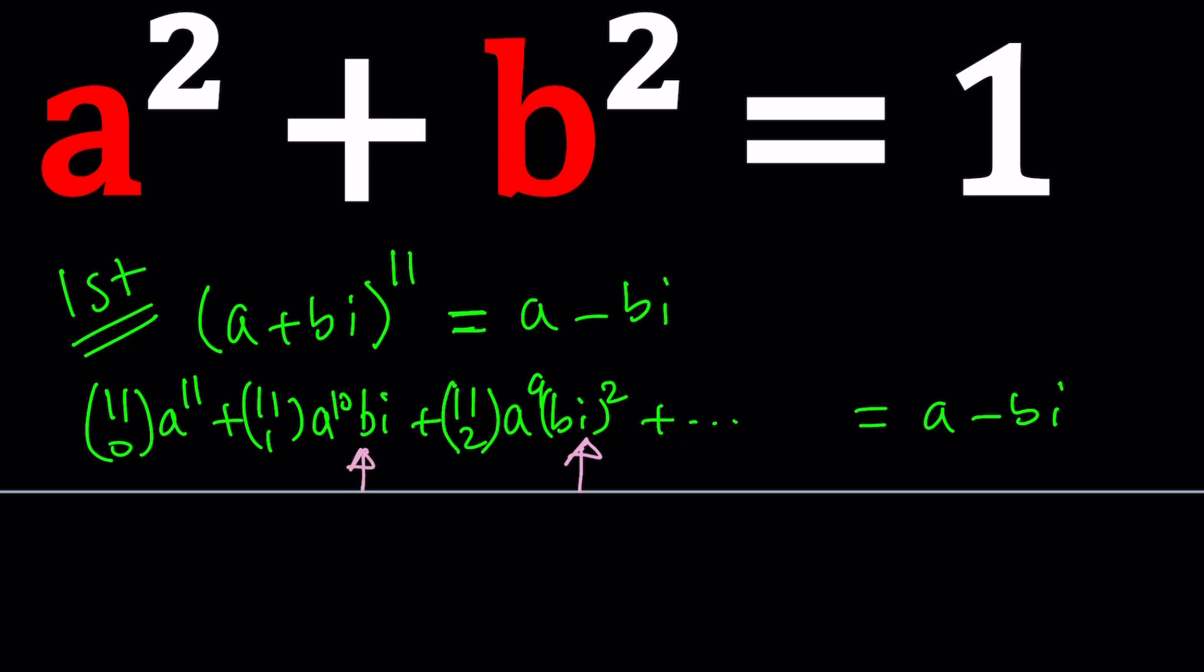And then you're going to separate the real and imaginary parts. Obviously on the right hand side the real part is a and the imaginary part is negative b. And you're going to set those equal to each other, just like when you compare two complex numbers that are equal, that's what you do. Again, this is going to be super duper painful and I'm not even sure if this is going to result with something. I haven't tried it because it's super long, super boring, cumbersome.